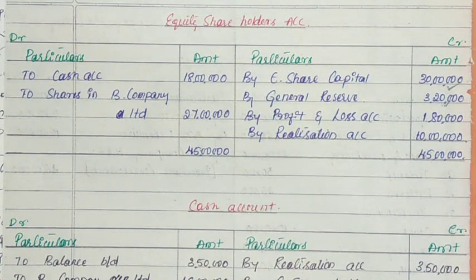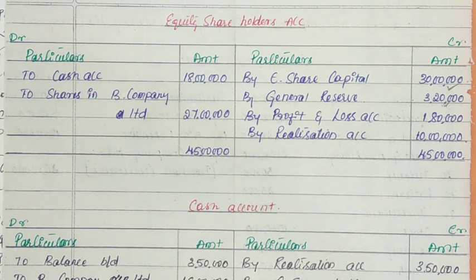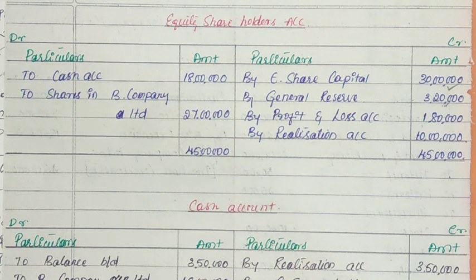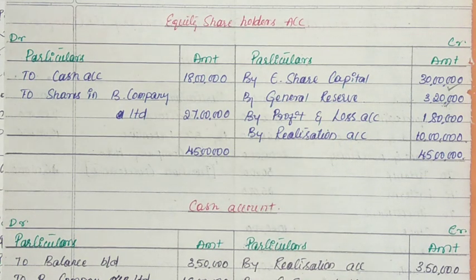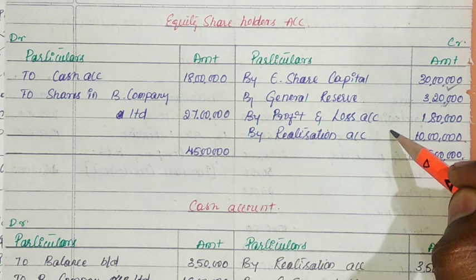The main statutory reserves include: Investment Allowance Reserve, Development Rebate Reserve, Workman Compensation Fund, Foreign Project Reserve, and Export Profit Reserve. Accumulated reserves — which are not statutory — include: profit and loss account, general reserve, reserve fund, revenue reserve, sinking fund, debenture redemption reserve, capital redemption reserve, share forfeited account, securities premium account, workman accident fund, insurance fund, dividend equalization fund, and dividend rebate reserve. These are the accumulated profits.